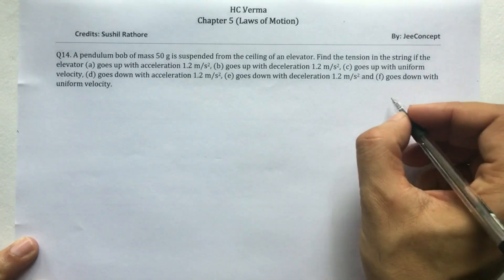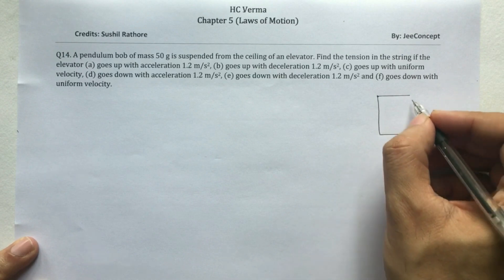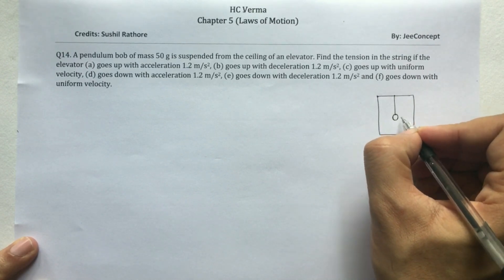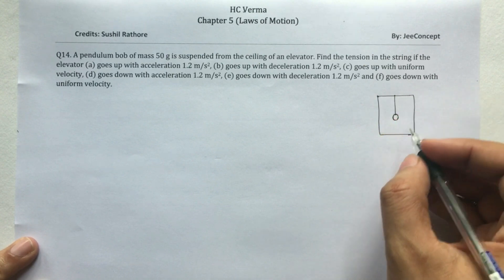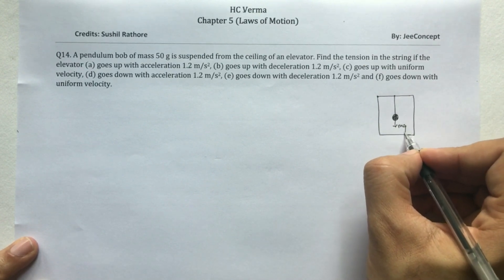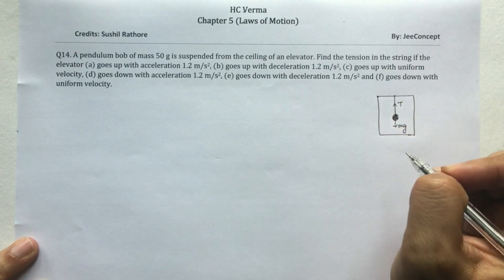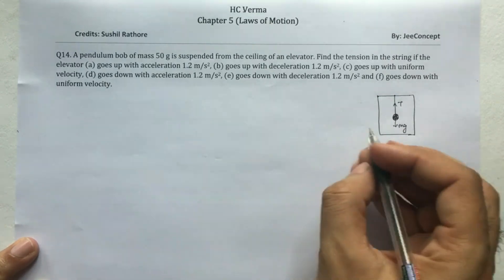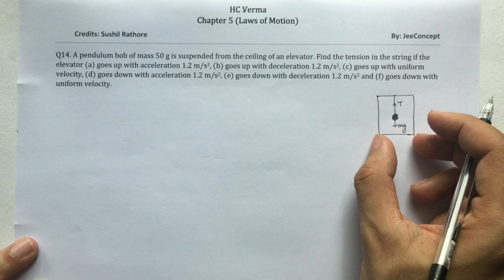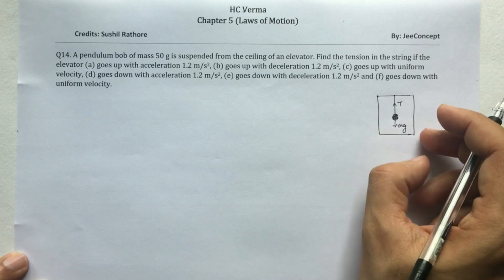So in this case, say there is an elevator with a pendulum bob hanging from the ceiling. In any case, there will always be a mg force downward acting on this bob and the tension T in the string. Depending on the different scenarios — whether the elevator is going up or down with uniform velocity — we can easily solve this problem.